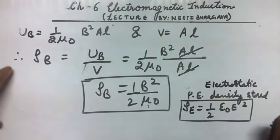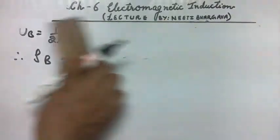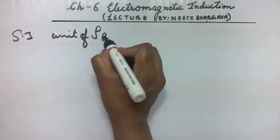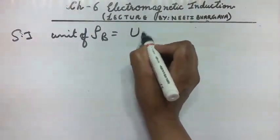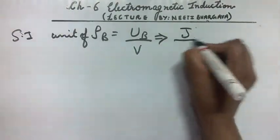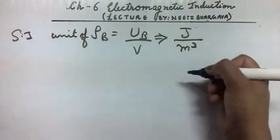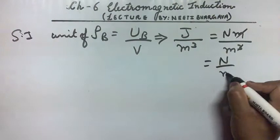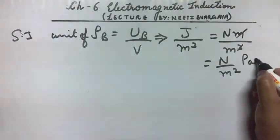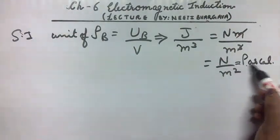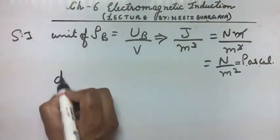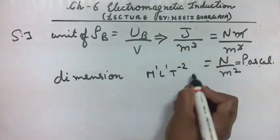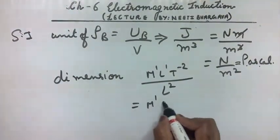The SI unit of magnetic energy density: since it is energy per unit volume, the unit is joule per meter cube, which equals newton·meter per meter cube, giving newton per meter squared — the unit of pressure, also known as pascal. Its dimension is M¹L⁻¹T⁻², since newton is M¹L¹T⁻² and meter squared is L².